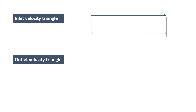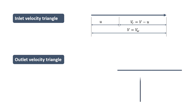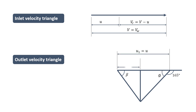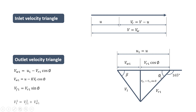Now we have to draw inlet and outlet velocity triangles to find out the various other parameters. In the case of a Pelton wheel the jet is horizontal, so the inlet triangle is simply a straight line. Since the jet is deflected by 165 degrees, phi equals 180 minus 165, that is 15 degrees. From the inlet triangle, the absolute velocity of the jet equals the velocity of the whirl, and the relative velocity is the difference between the jet velocity and the blade speed.